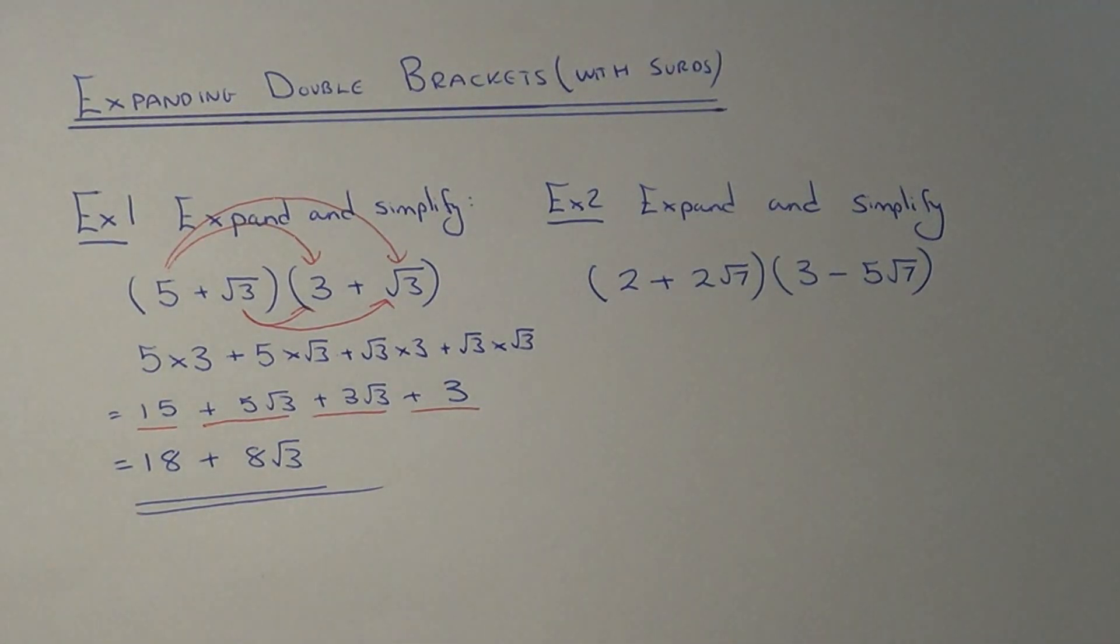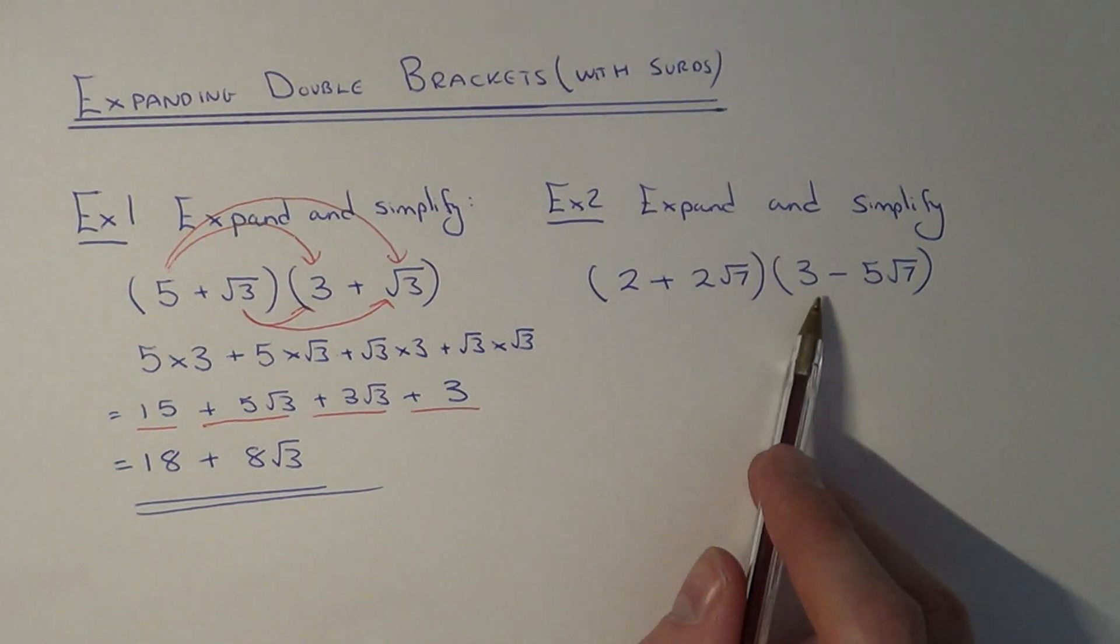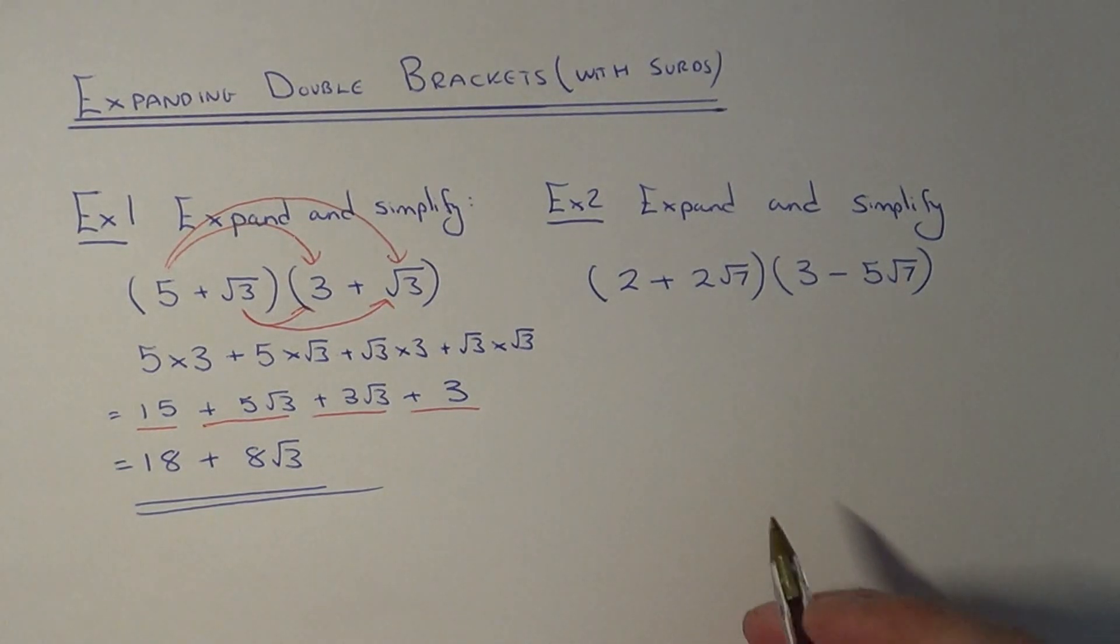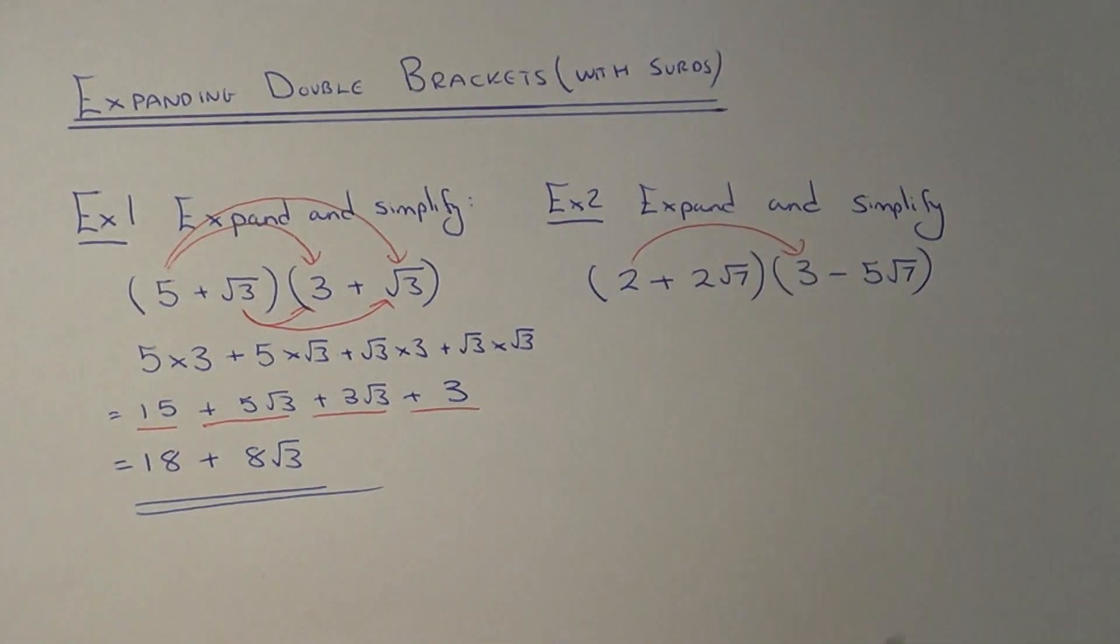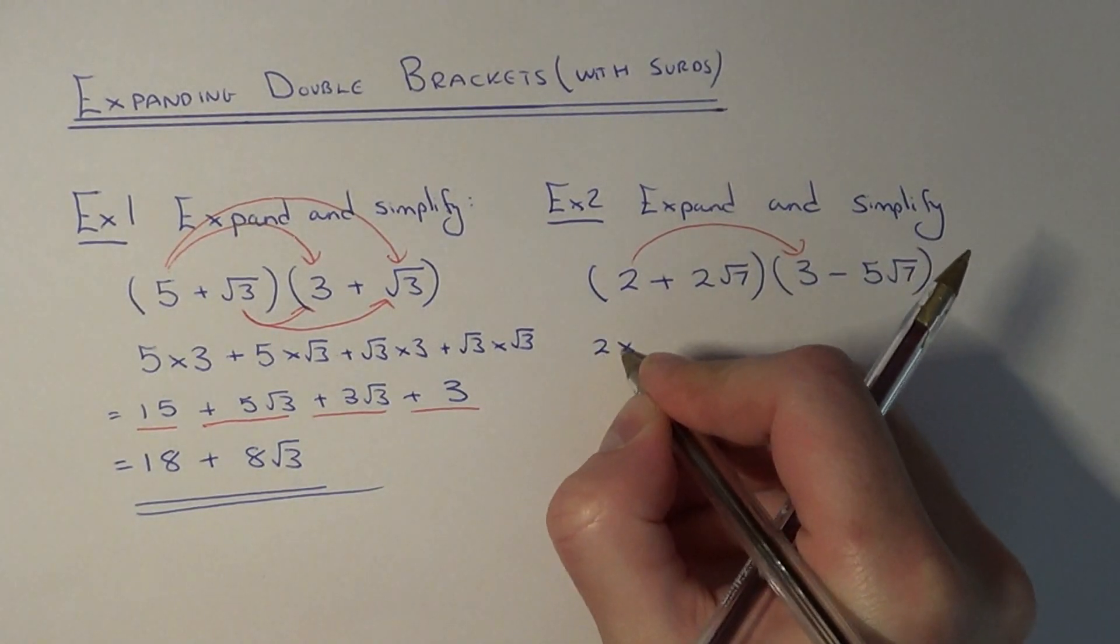So let's move on to example 2. This next one is much harder. We've got 2 plus 2 root 7 and 3 minus 5 root 7. So again, if we multiply our first terms together, we've got 2 times 3.